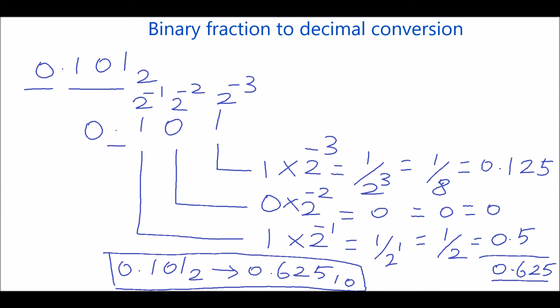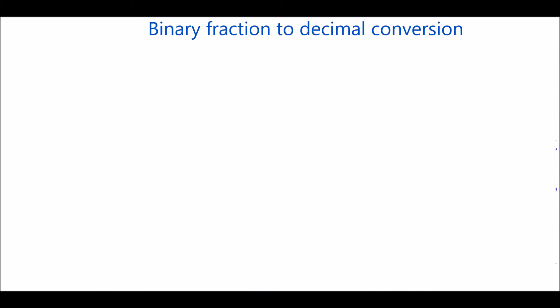That example didn't have an integer part — it had only the fractional part. Let's take another example with a combination of integer and fractional parts. Now we will see how to convert the binary number 10.11₂ to its equivalent decimal number.